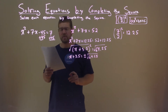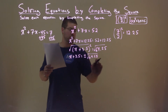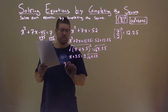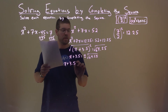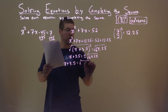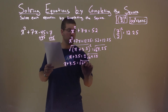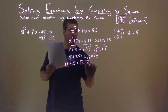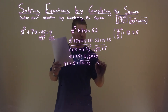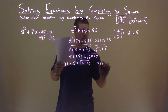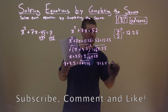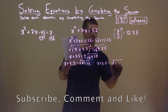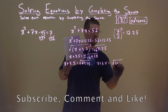Since it's plus or minus, we can write two equations: x plus 3.5 equals a positive square root of 64.25, and x plus 3.5 equals a negative square root of 64.25.